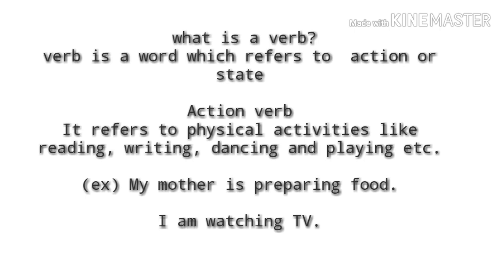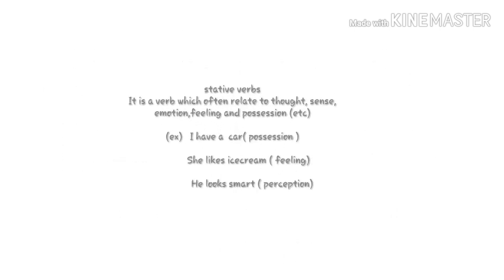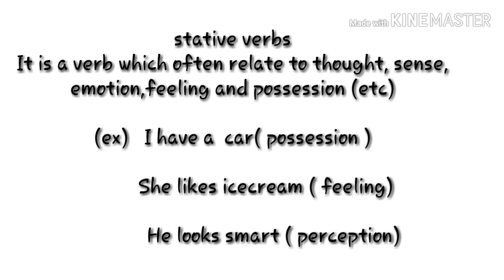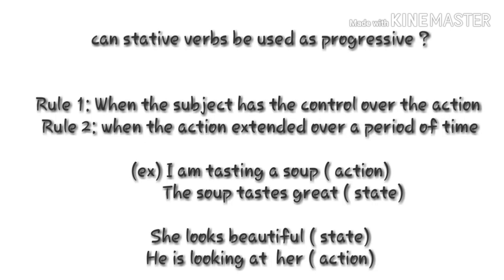A state verb is a word which often relates to feelings, emotions, sense perception, thought, opinion, and possession. Here are some examples: 'I have a car' — this is a possessive case, and you can't use the -ing form here. Similarly, 'she likes ice cream' and 'he looks smart' — these all refer to a statement or condition that simply exists. We can't use the -ing or continuous form here.